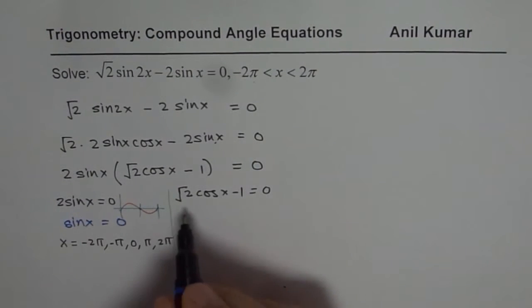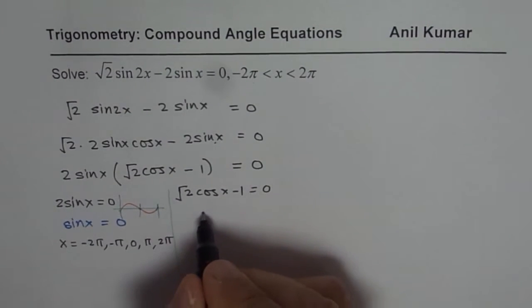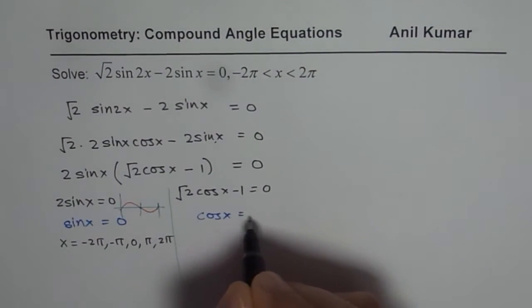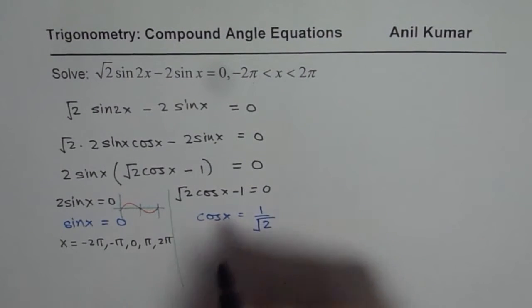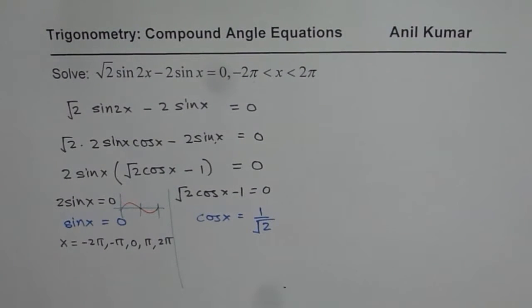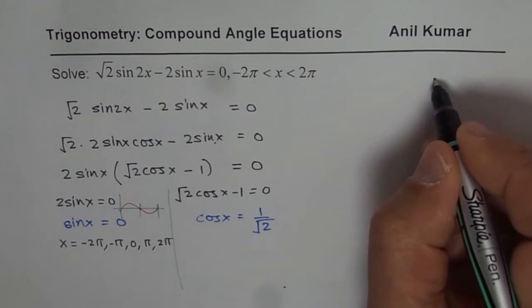The other part here is cos x could be equal to, so we have cos x = 1/√2, right? So that is the other solution. Now let us see how to find possible solutions for cos x.